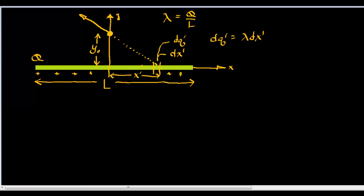We've got length L for our charge, and it's positive. One thing is that this point is on a plane that bisects the line charge perfectly in half. That means that on one side, every single point along that side creates a vector with an x-component going to the right, and on the other side there's an equal x-component going to the left — so the x direction cancels out.